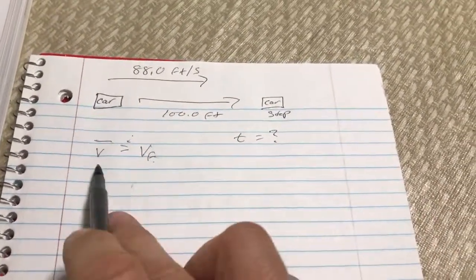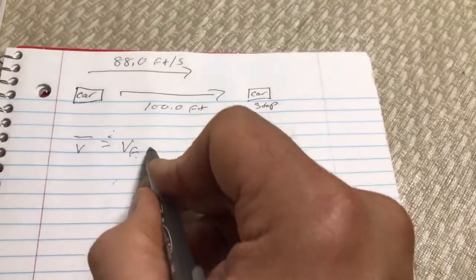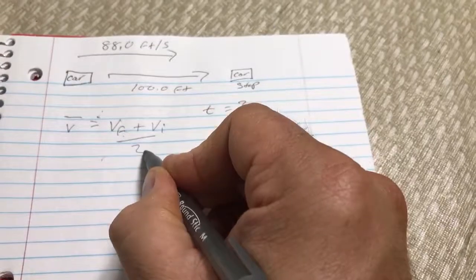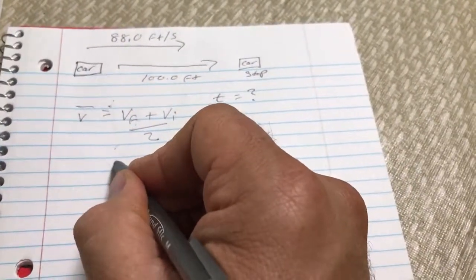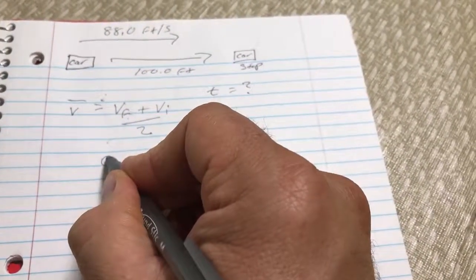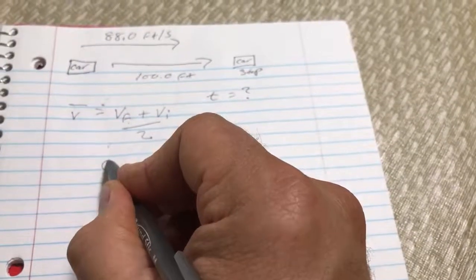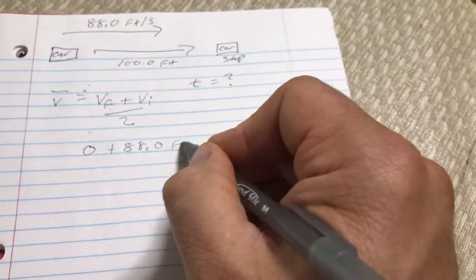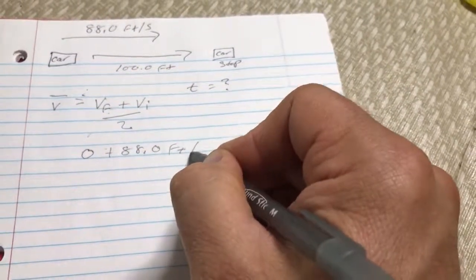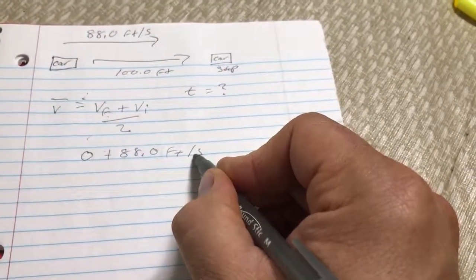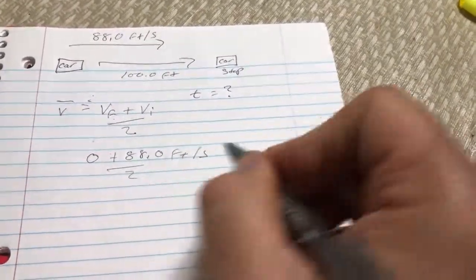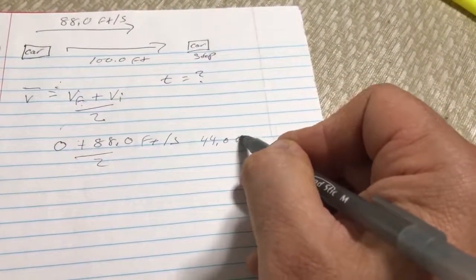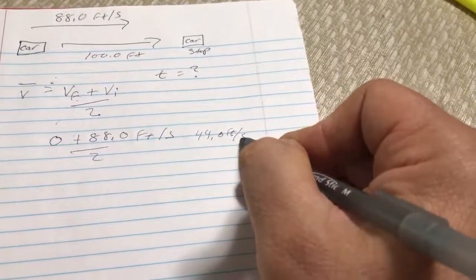So I'm thinking that velocity is the final velocity plus the initial velocity, which would be zero because the final velocity is zero, plus the 88 feet per second, divided by the two, would be 44.0 feet per second, right?